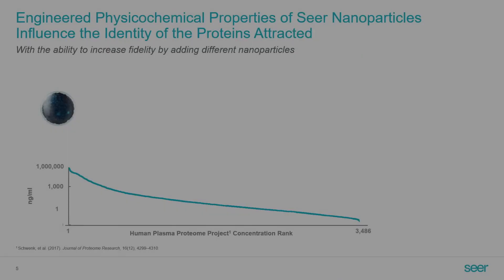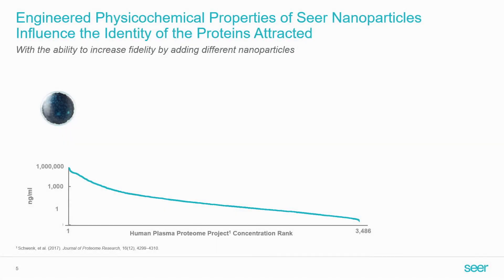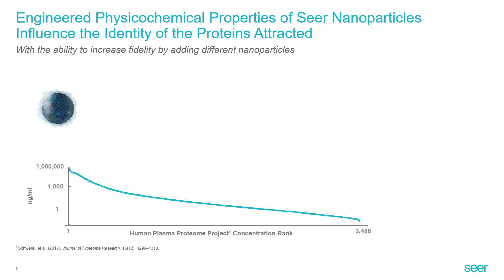When a Sear nanoparticle comes in contact with a biological sample, it quickly forms a layer of biomolecules on its surface — a protein corona. The binding of proteins to our nanoparticle surface is mediated by the physicochemical properties of the nanoparticles and the proteins that bind to it.